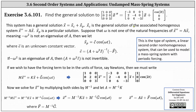We're asked to find the general solution to the given equation. This equation represents a linear, second-order, non-homogeneous system of ODEs that can be used to model a mass-spring system with periodic forcing. This system has a general solution of x equals x sub c plus x sub p, where x sub c is the complementary solution — the general solution of the associated homogeneous system x double prime equals A times x — and x sub p is a particular solution.